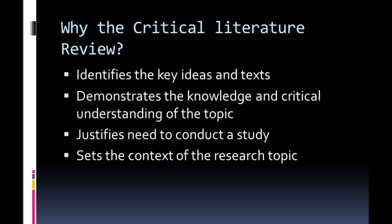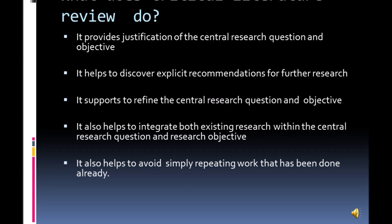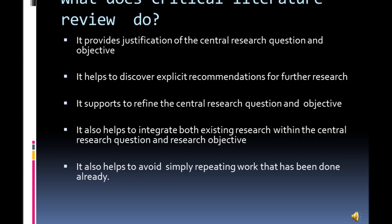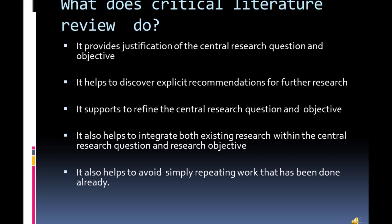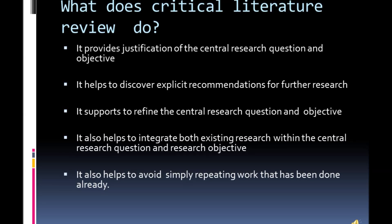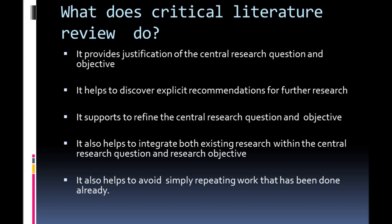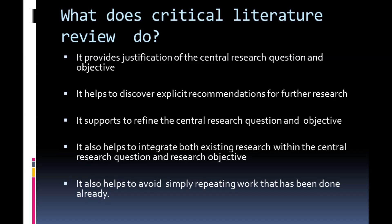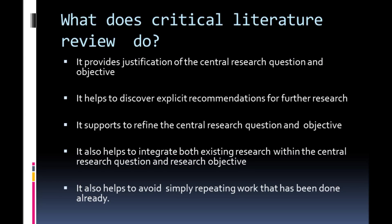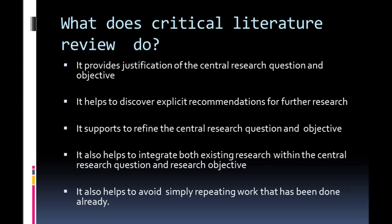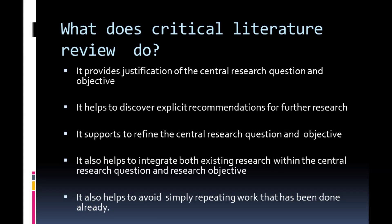What does a critical literature review do? It provides a justification of the central research question and objective. It helps to discover explicit recommendations for further research. It supports refining the central research question and objective. It also helps to integrate both existing research within the central research question and research objective, and it helps to avoid simply repeating work that has already been done.